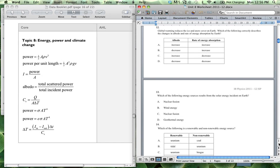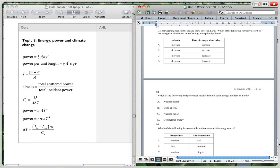Looking at question 12, it says global warming reduces the ice and snow cover on Earth. Which of the following correctly describes the change in albedo and rate of energy absorption by the Earth? So with global warming, we're getting less ice and snow on the Earth.